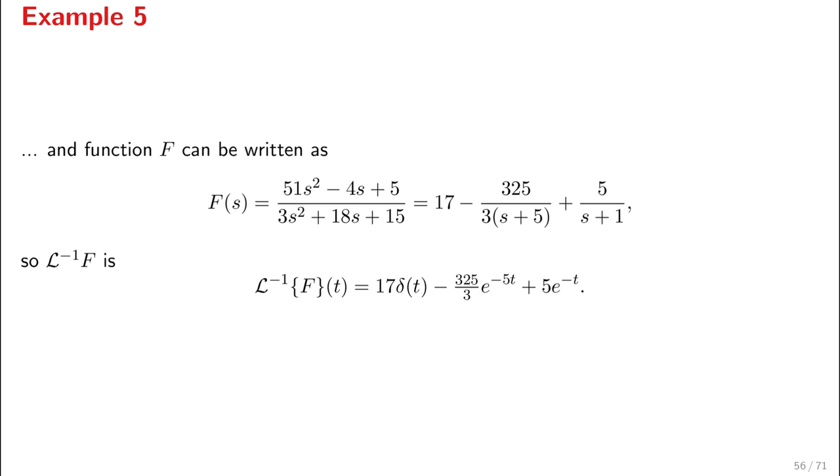The only thing that changes is the constant term. So F(s) now has been written in a partial fractions expansion like that: 17 - 325/3(s + 5) and so on. And now, what is the inverse Laplace transform of 17? It is 17 times Dirac, 17 times δ. And this is our inverse Laplace transform. That's it.